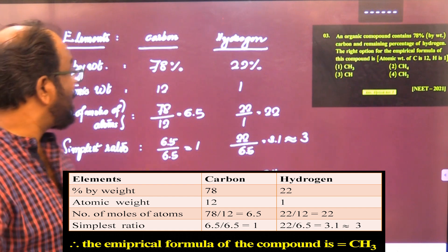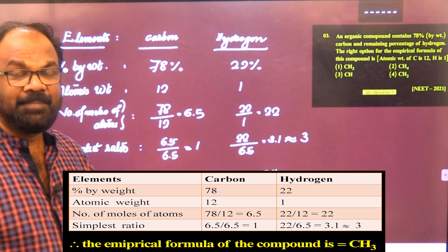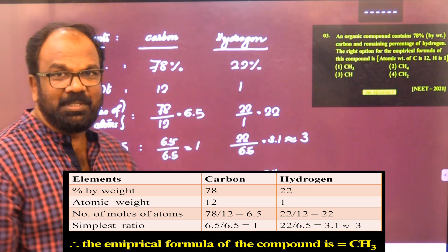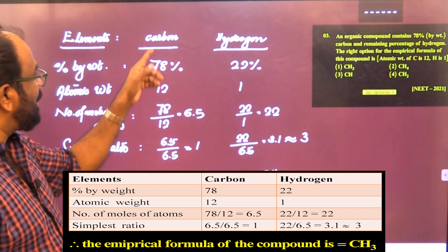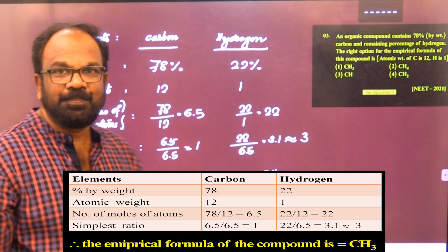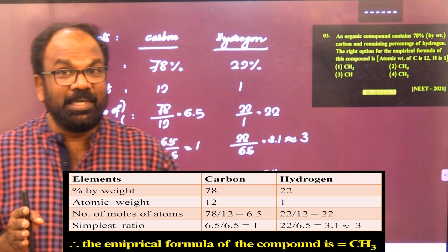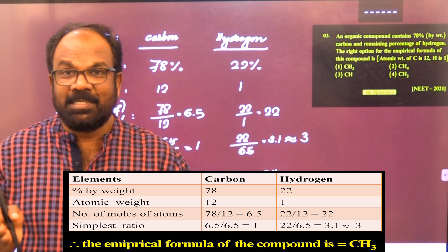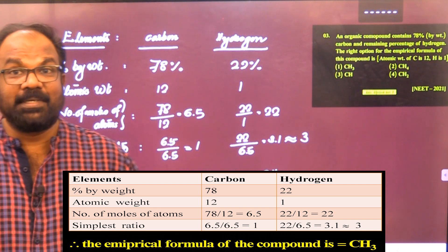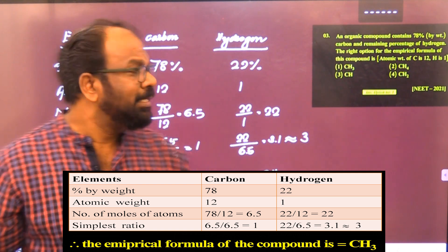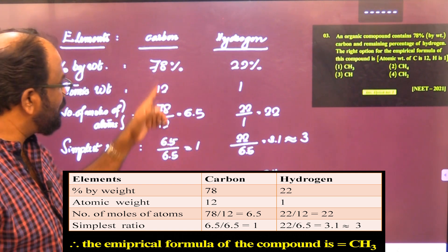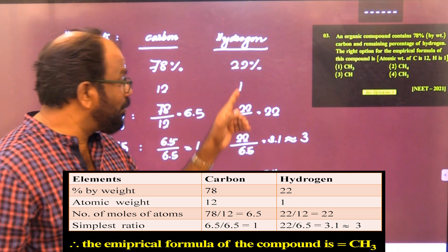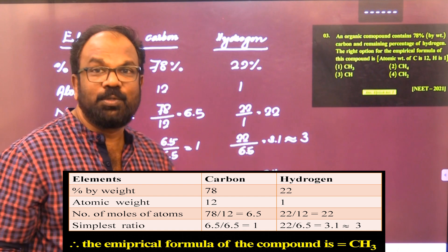The percentage by weight of carbon is 78% and that of hydrogen = 100 − 78 = 22%. Atomic weight of carbon is 12 and hydrogen is 1. The empirical formula represents the ratio of number of different atoms in one molecule. Number of moles of carbon atoms = 78/12 = 6.5, and of hydrogen = 22/1 = 22.